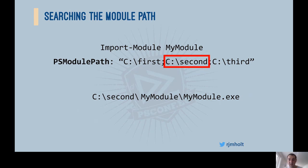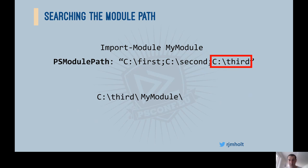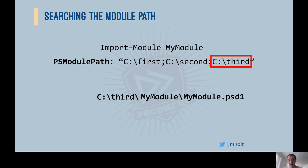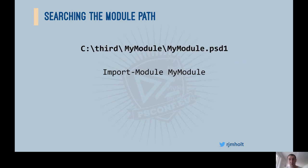In our example we didn't find anything in the second directory, so we move on to the third directory. We immediately look for the MyModule directory and find it. We look for a version directory but don't find one, so we move on to looking for a manifest. This time we find one, and so the Import-Module command resolves to importing the module at this particular path, and our search is done. It's worth noting that Import-Module is totally case-insensitive on all platforms — PowerShell doesn't care about the casing of the module name.